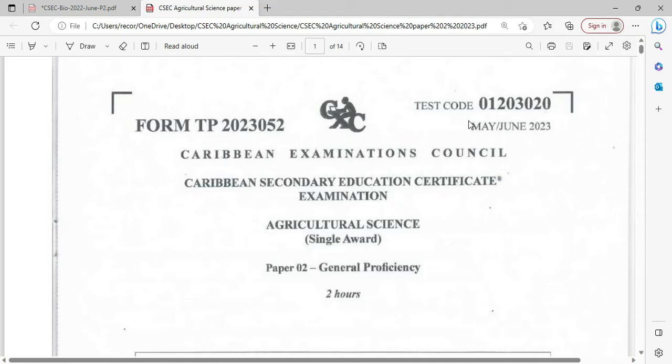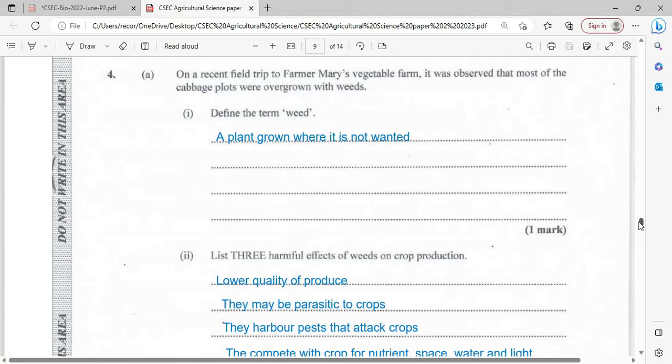Without further ado, let's jump right into question number four. On a recent field trip to Farmer Mary's vegetable farm, it was observed that most of the cabbage plots were overgrown with weeds. Define the term weed. A weed is pretty much a plant grown where it is not wanted.